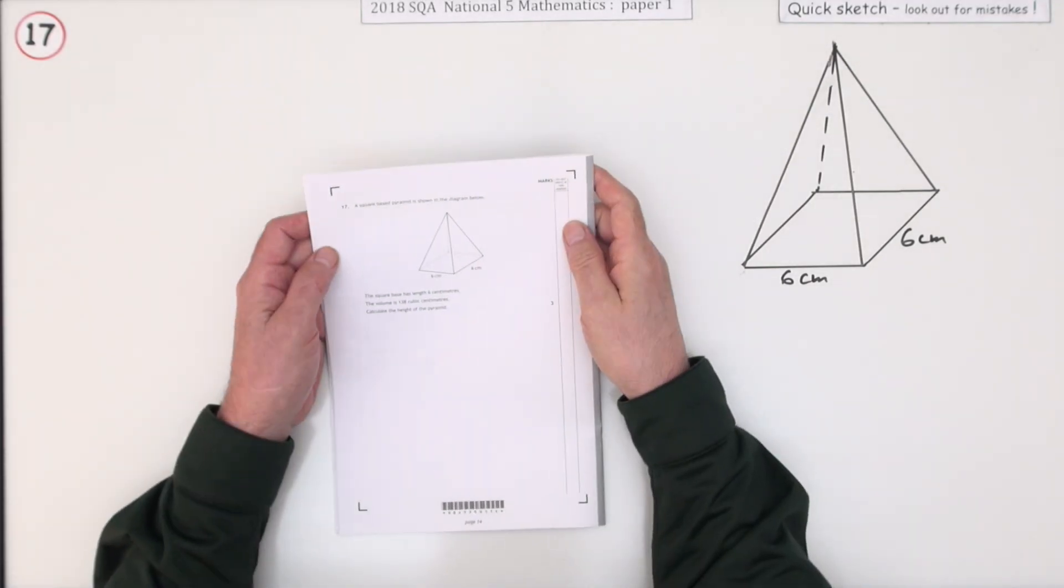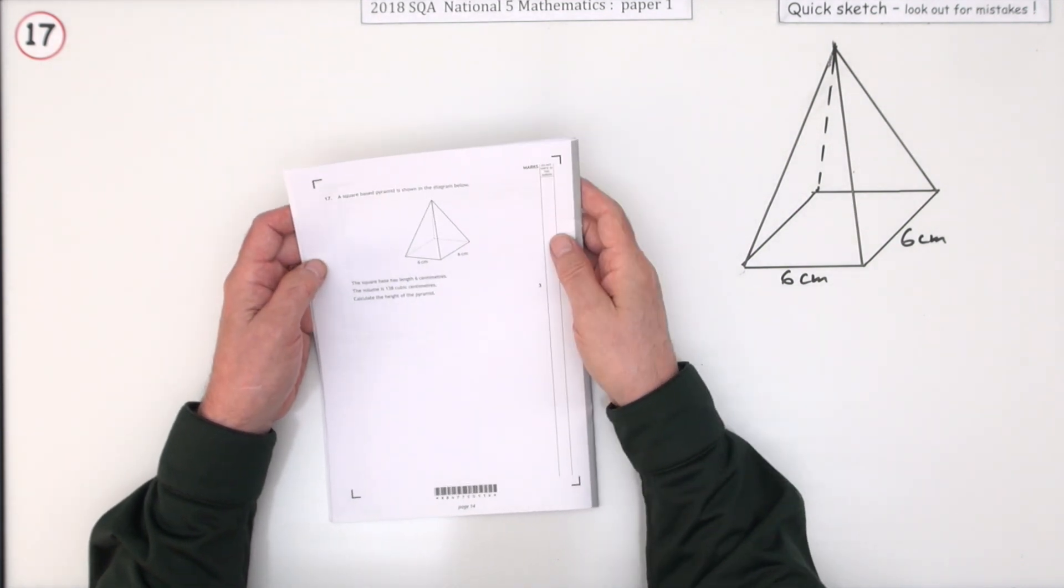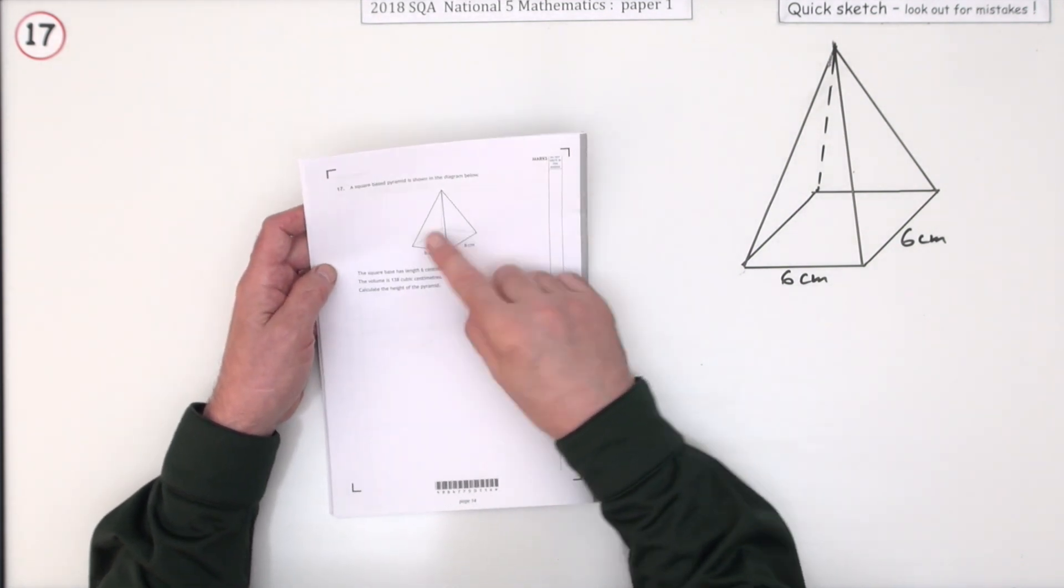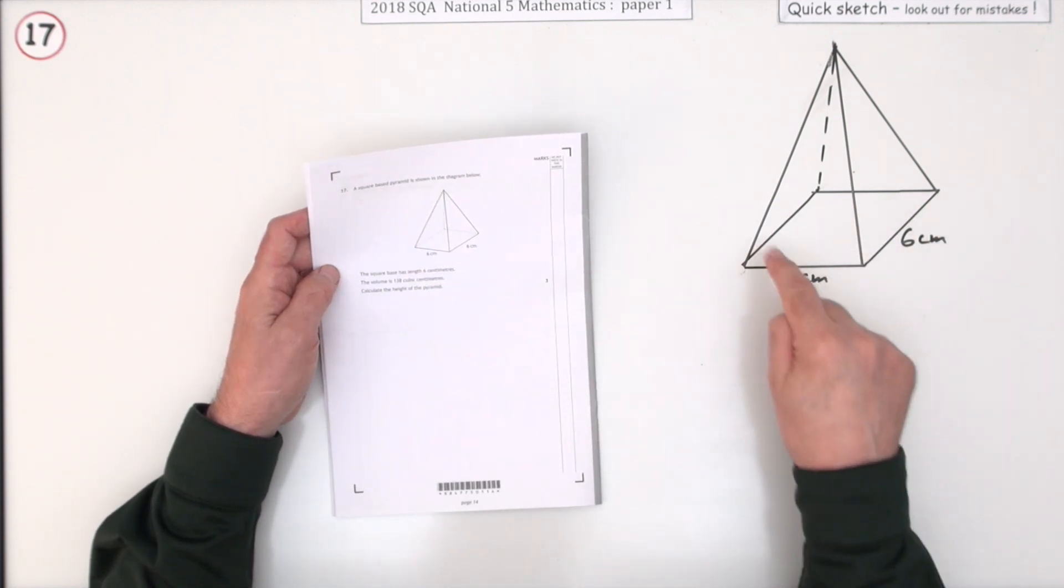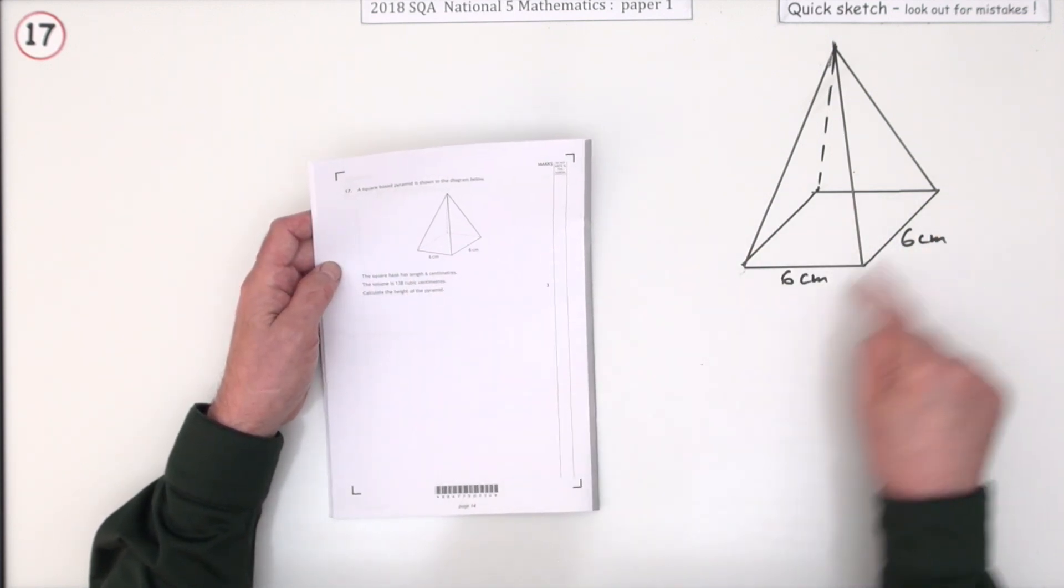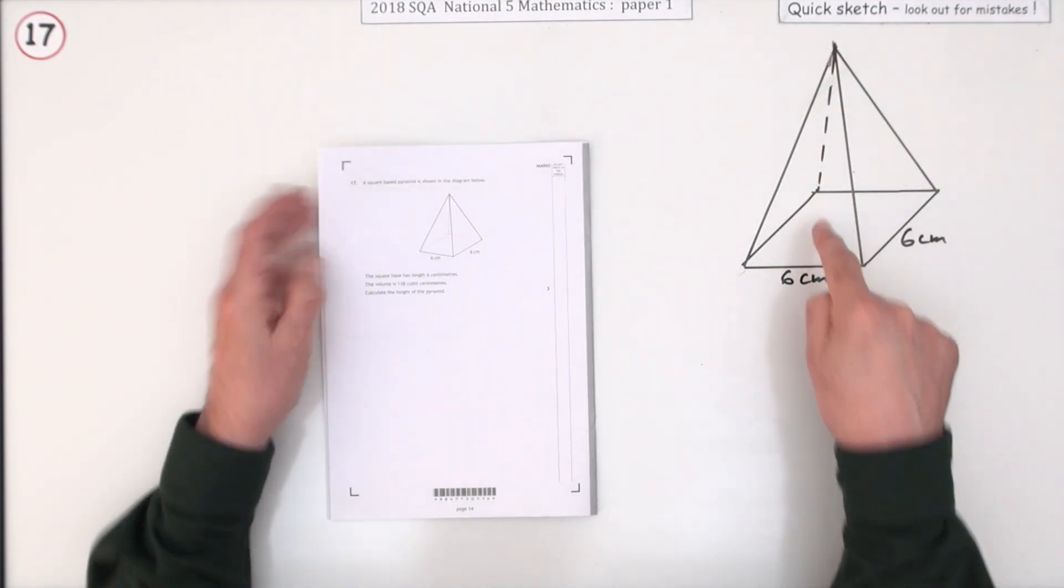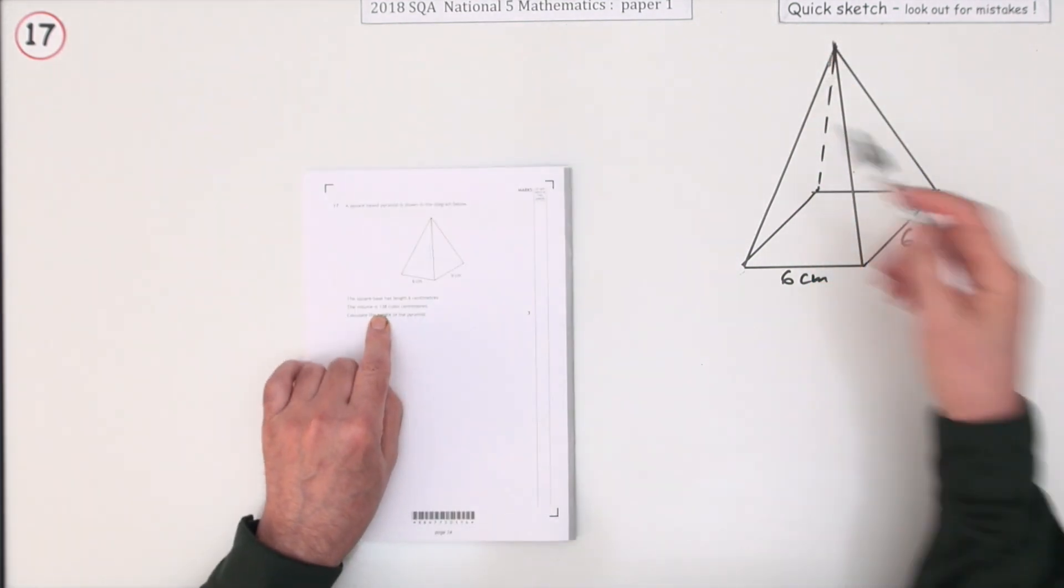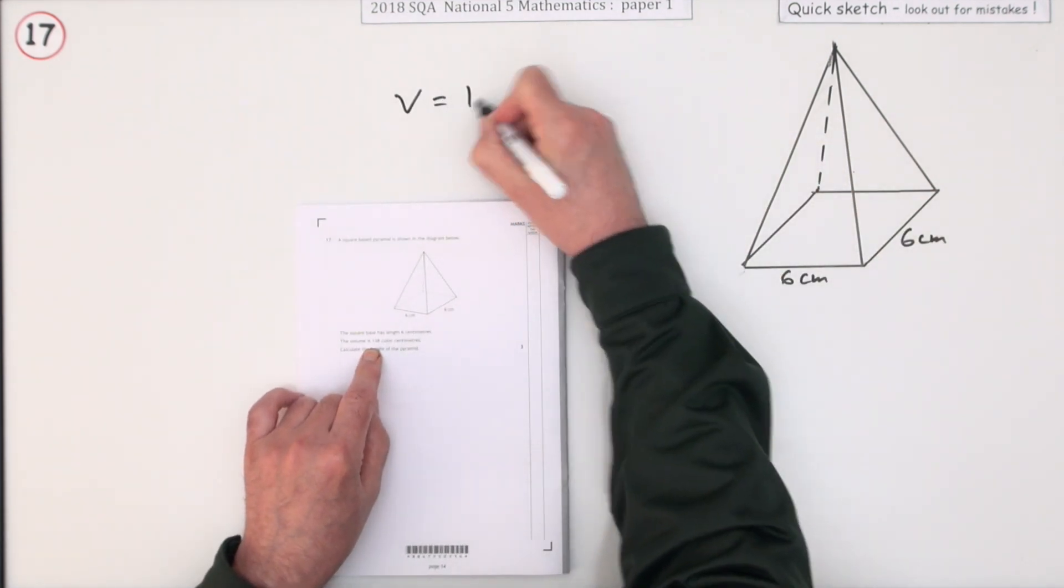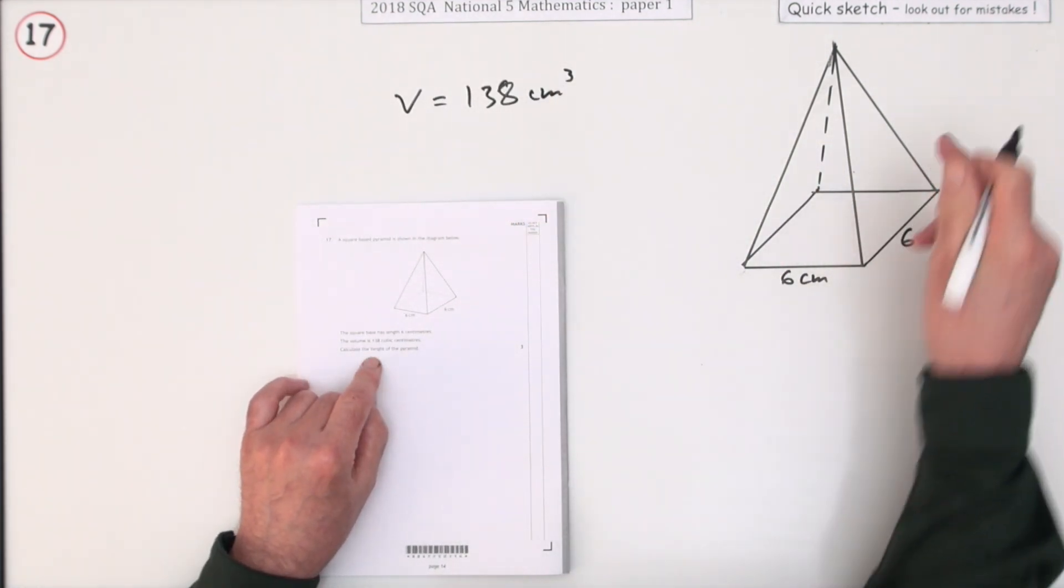Number 17 from paper 1 of the 2018 National 5, 3 marks for a volumes question essentially. You've got a square based pyramid, so the base is a square. It tells you the length of the side of the square, but it doesn't tell you its height. Instead of that it tells you its volume. It says the volume of this is 138 cubic centimetres. In that case what's the height?